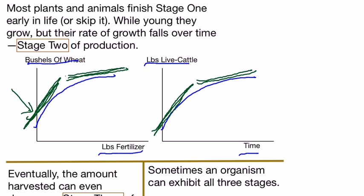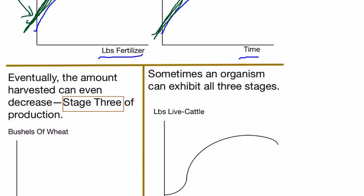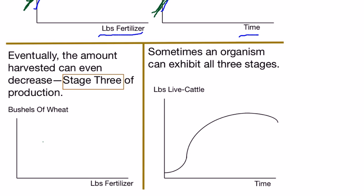That is stage two of production. You may be thinking: if you let cattle get older and older, they'll eventually stop growing, and in their elderly years they may actually decline in weight. You would be exactly right, and you would be thinking about stage three of production.